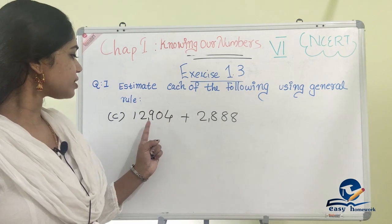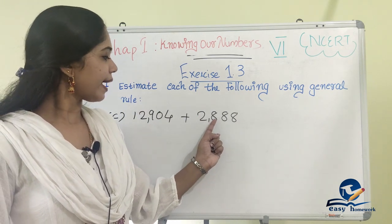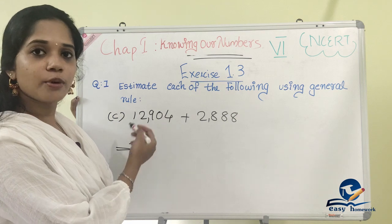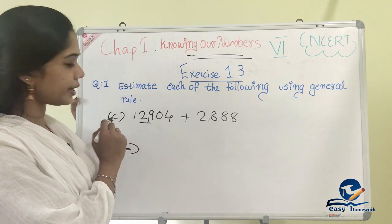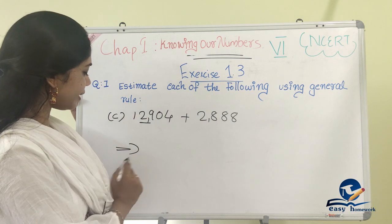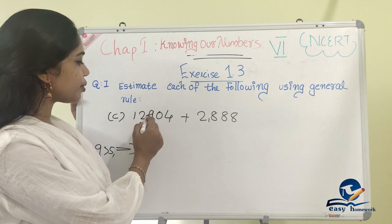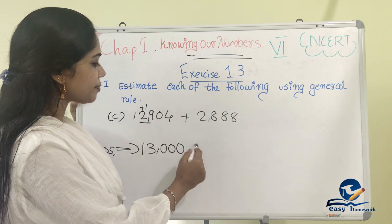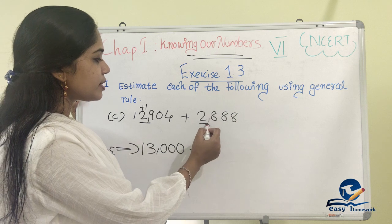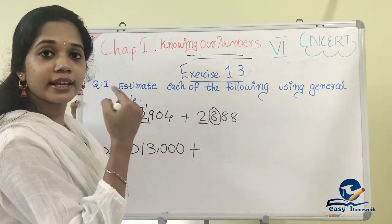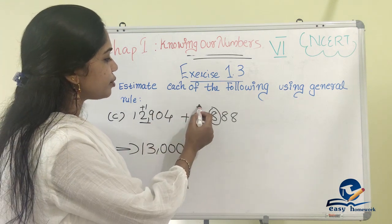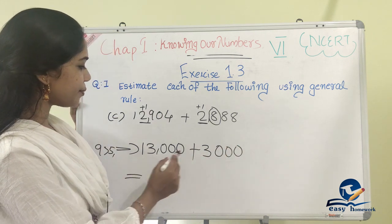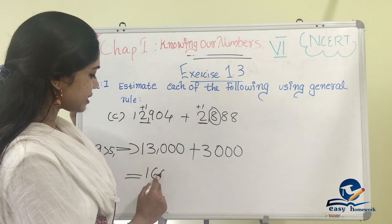The third question is 12,904 plus 2,888. We round to the nearest 1,000. For 12,904, in the thousands position is 2, and the next digit is 9. Since 9 is greater than 5, we round up, giving 13,000. For 2,888, the hundreds digit is 8, which is greater than 5, so it rounds to 3,000. The final answer is 13,000 plus 3,000 equals 16,000.